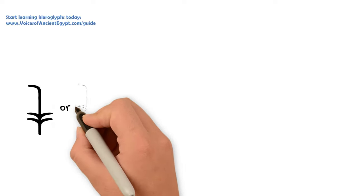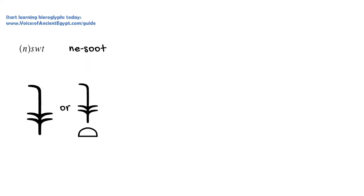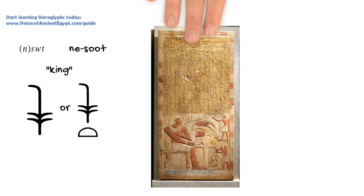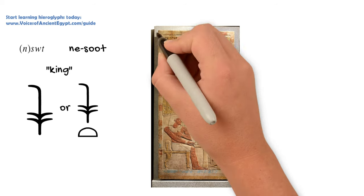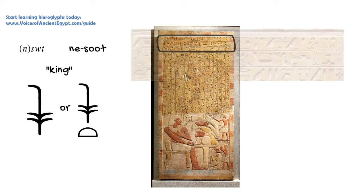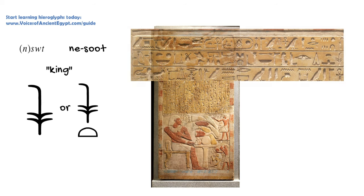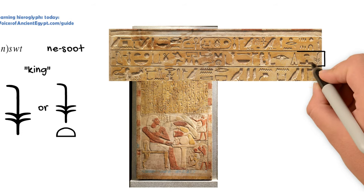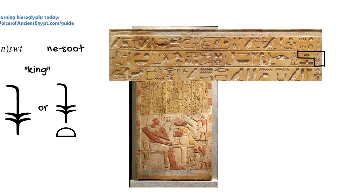But oftentimes they'll also use the 'sue' plant by itself, or the 'sue' plant with just a T bread loaf, as the full word for 'nesut' without the N written in there. The sedge plant is associated with Upper Egypt, but it also, in this sense, refers to the eternal office of kingship more generally.